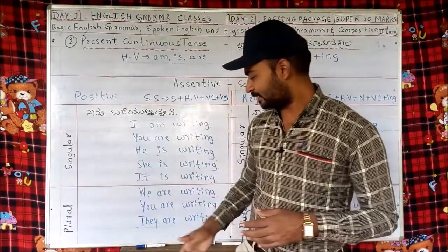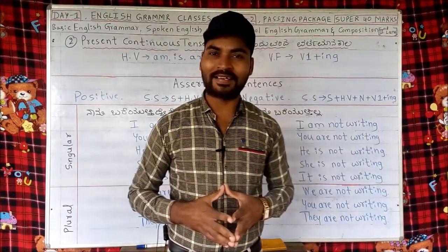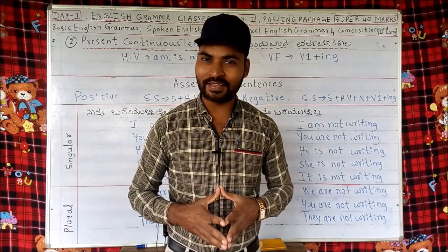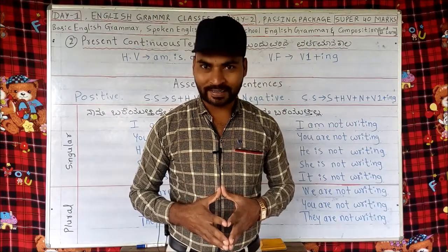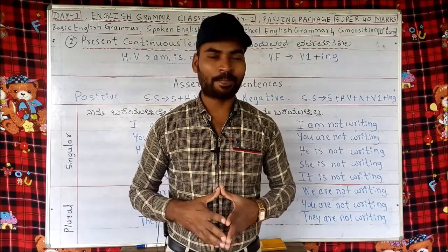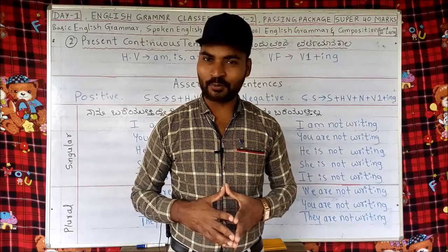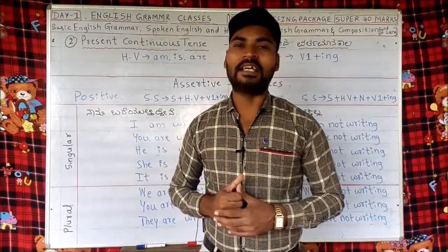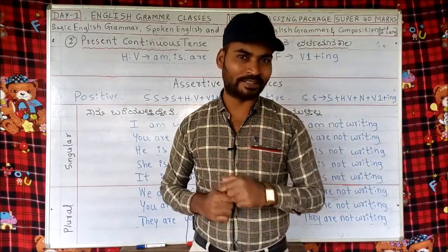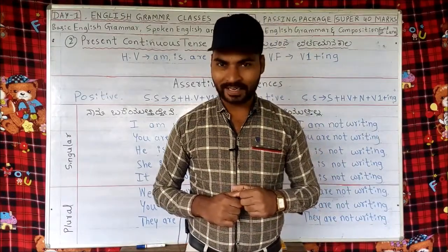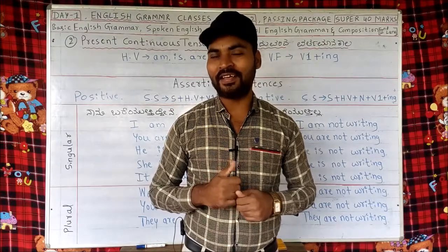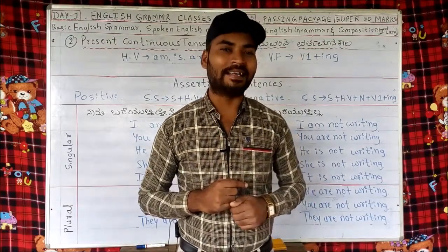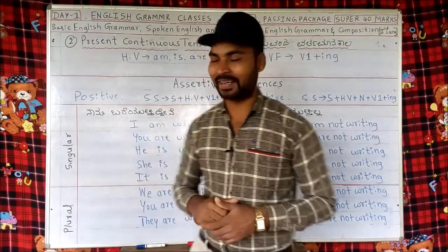Now let's take another example — the verb 'read'. I am reading — Naanu Oduttiddene. You are reading — Neenu Oduttiddiya. He is reading — Avanu Oduttiddane. She is reading — Avalu Oduttiddaale. It is reading — Adu Oduttidde. We are reading — Naamu Oduttiddeeve. You are reading — Neevu Oduttiddeera. They are reading — Avaru Oduttiddaare.